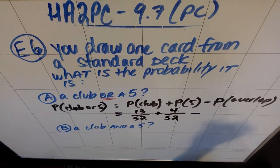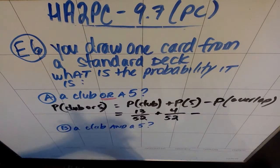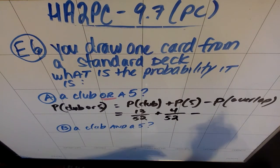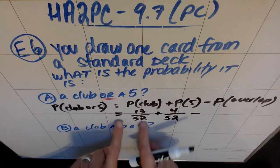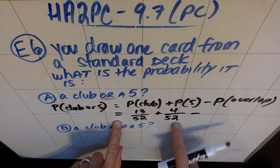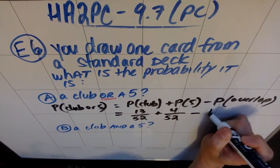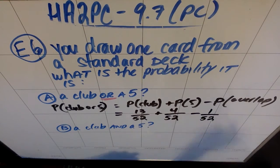And then the only card that meets both of these qualities where there would be overlap is I counted the 5 of clubs twice. I counted the 5 of clubs as a club, and I counted the 5 of clubs as a 5. So I would have to subtract that 1 overlap for the 5 of clubs.